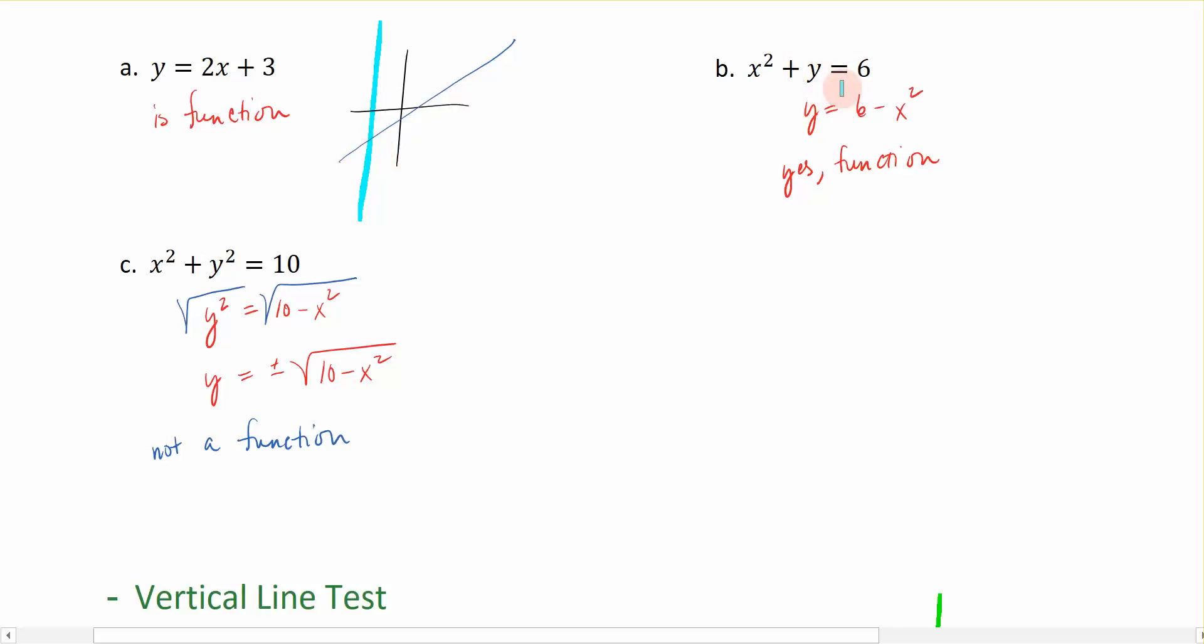Over here, this is a picture of a parabola. This equation is represented by something that looks something like this, which is the picture we had below. If I were to drop a vertical line on it, you can see that it does pass the vertical line test.